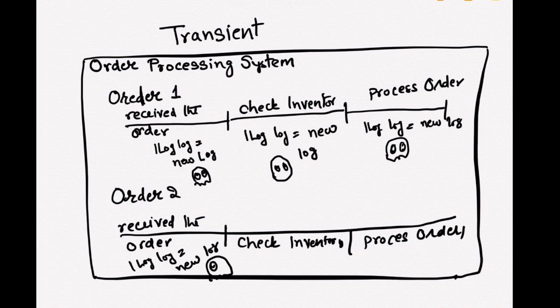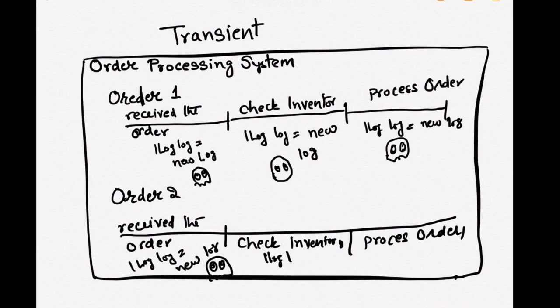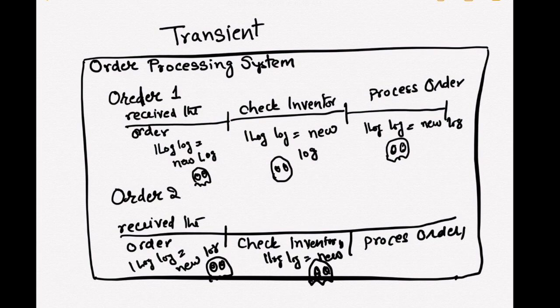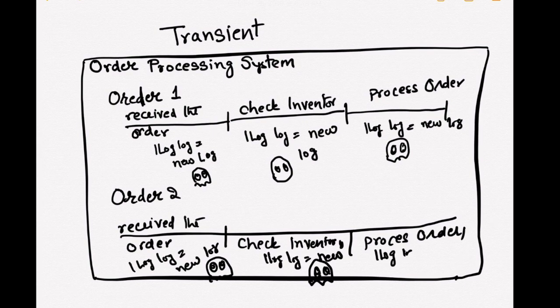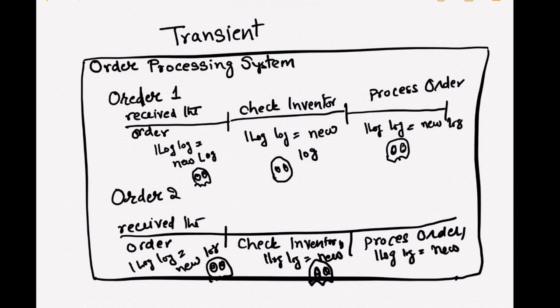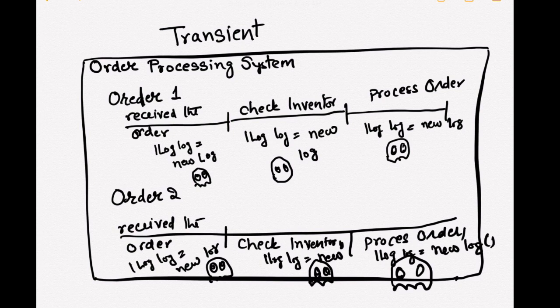So order one created three services or objects behind the scene. And order two, same way, created three services. So two orders created six services. If there was one more order, we'll have three more. So every step of the request is creating a new service or object behind the scene.